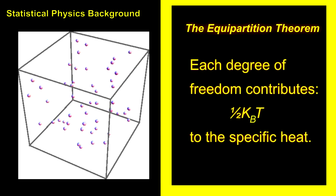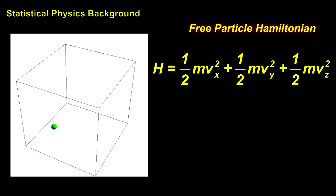We will be using the Equipartition Theorem, which was developed in 1860. It applies to systems where the energy can be expressed in squares of generalized coordinates. The theorem says that the specific heat of the system is determined by the number of squared coordinates. Each term with a squared coordinate contributes one-half kt to the specific heat.